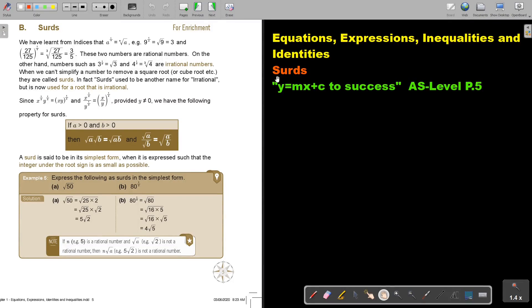In this video we are going to do surds. You will find this on page 5 in the Namibia AS level mathematics textbook Y equals MX plus C to success.